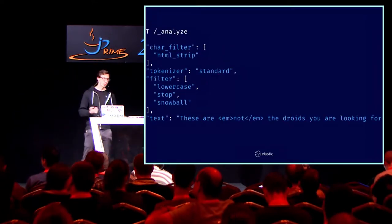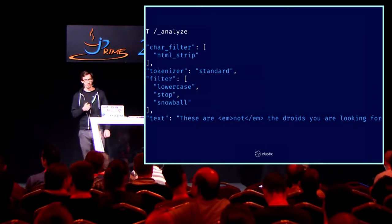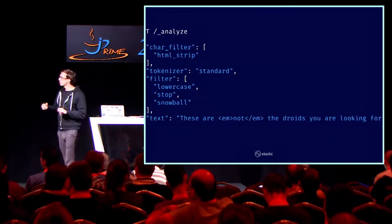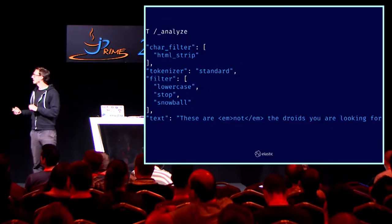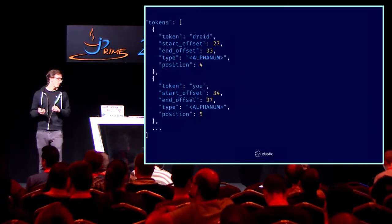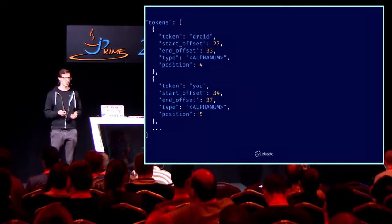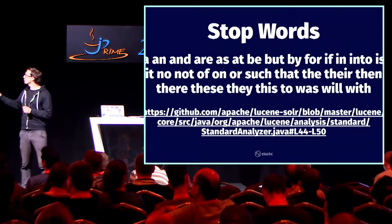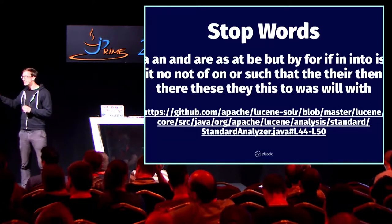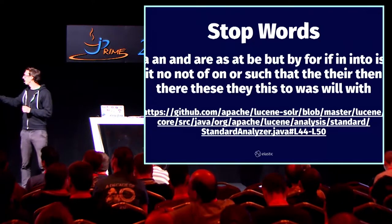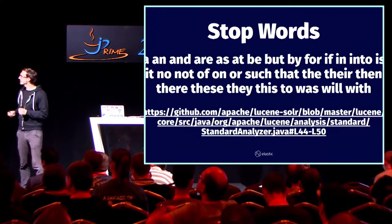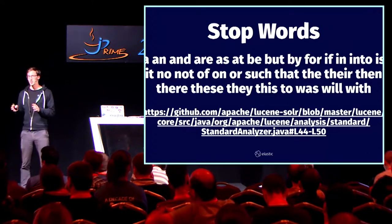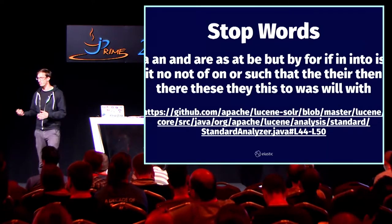You can also make this more complicated. You can say 'these are not the droids you're looking for' and then define all the steps explicitly. Here we have the HTML strip, which you need to manually add. You would get exactly the same result. If you're wondering what these weird stop words are that we've been talking about, it's actually a very short list — very deeply hidden in the bowels of Lucene. There's the code where you can find it, and this is the list — I think it's like 30 words or something. So these are just the stop words that will be removed. If you ever forget what the words are, you can look them up and see why a term was removed from your search phrase.